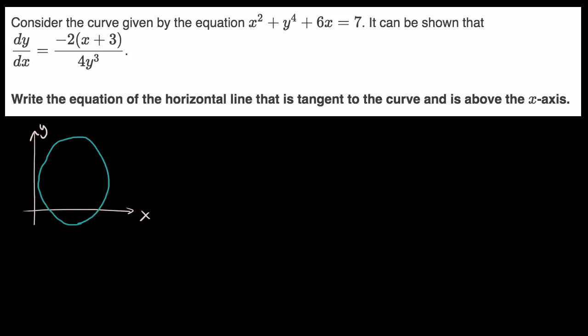Well, there would be two tangent lines that are horizontal based on how I've drawn it. One might be right over there, so it might be like there, and then another one might be maybe right over here. And they want the equation of the horizontal line that is tangent to the curve and is above the x-axis. So what do we know? What is true if this tangent line is horizontal?